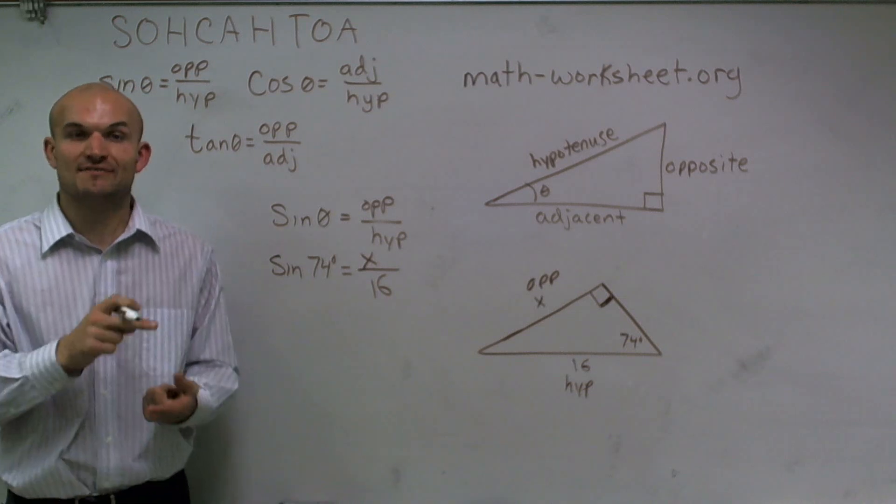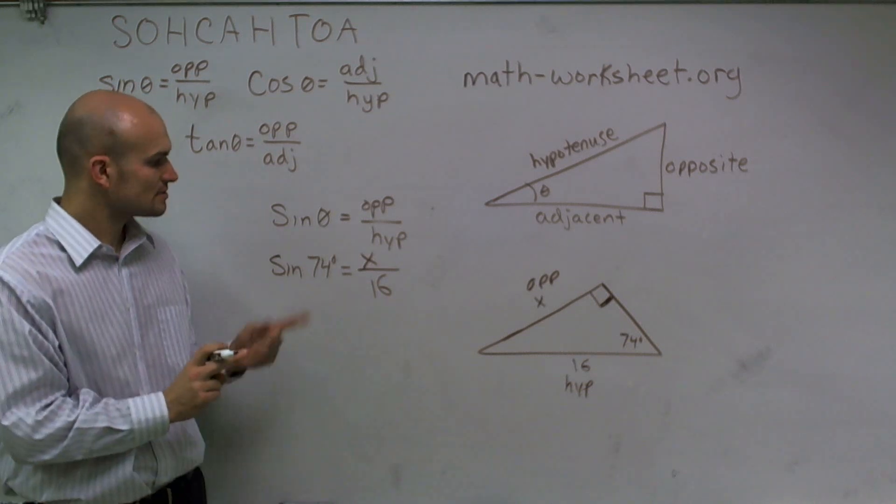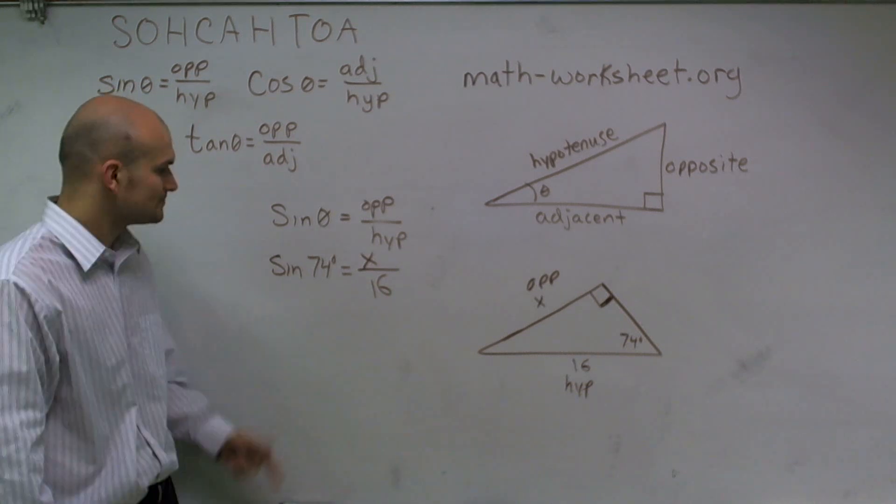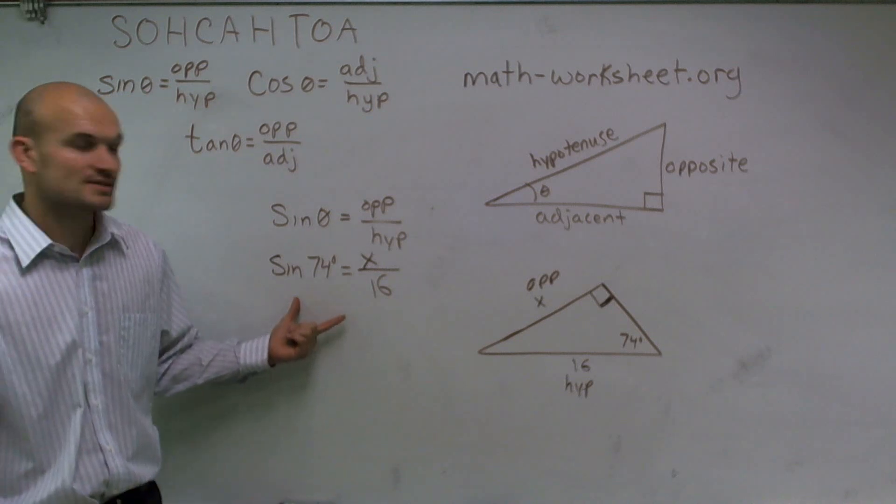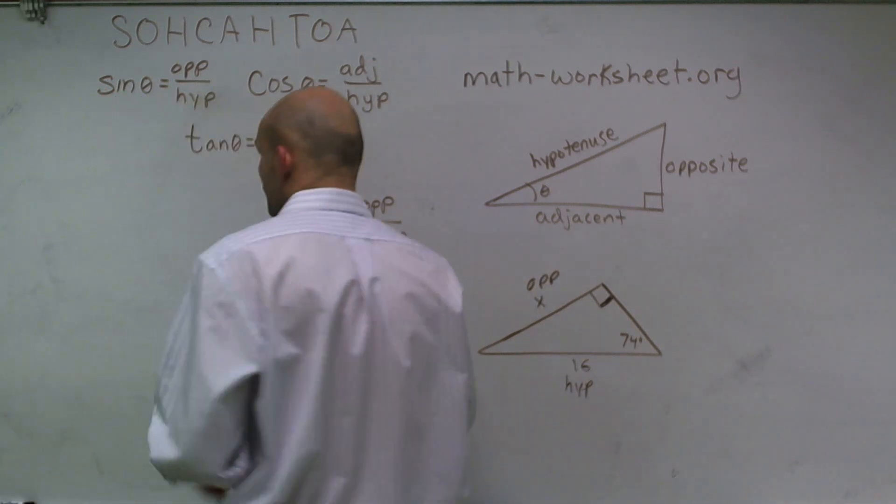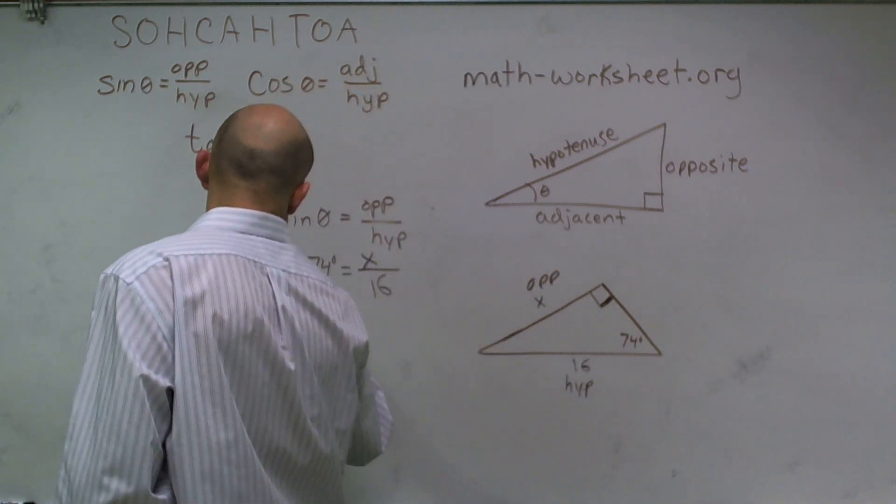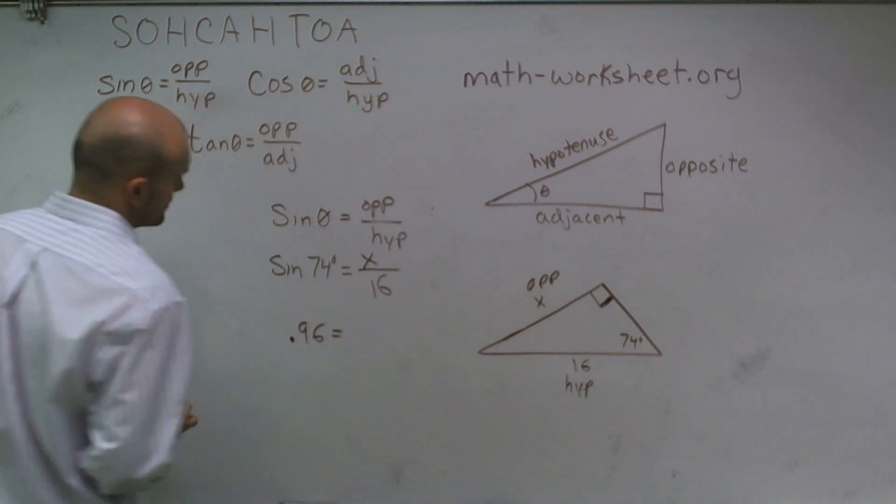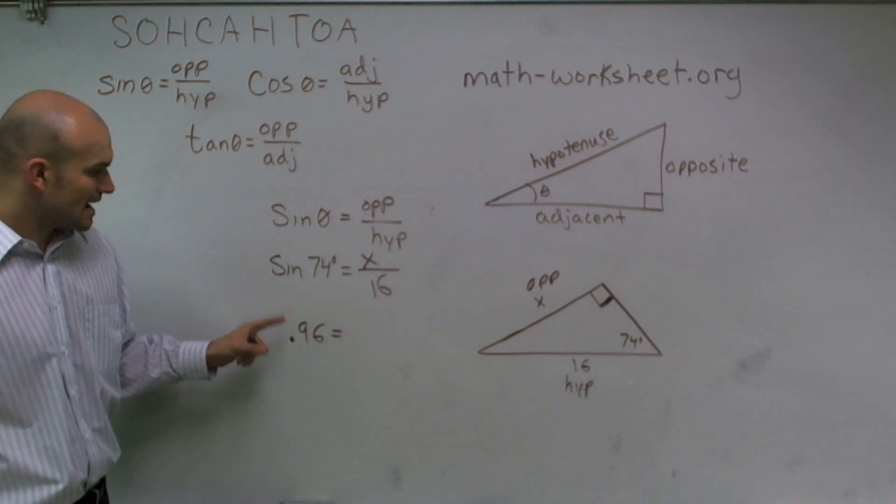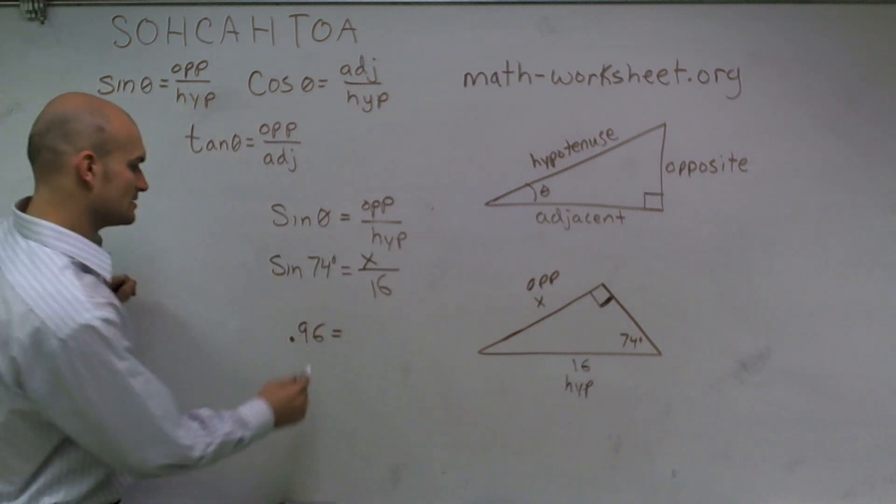Now, it's helpful to either have a table of your trig values or use a scientific calculator to figure out what sine of 74 is. When I evaluate sine of 74, I obtain 0.96. So sine of 74 is 0.96,